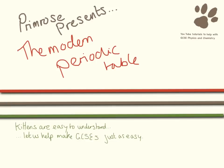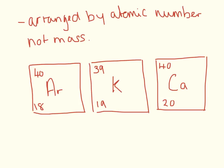Welcome to this video where we're going to be looking at how elements are arranged in the modern periodic table. So the big change between the modern periodic table and the periodic table that Mendeleev used is that the elements are arranged by atomic number, not by mass.